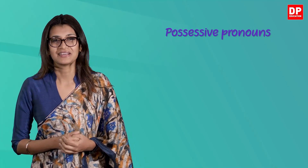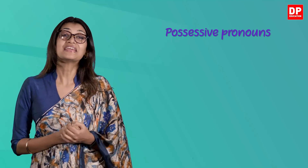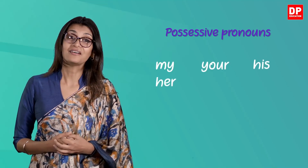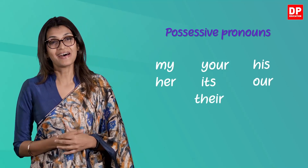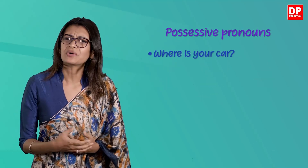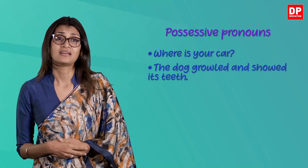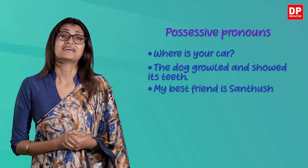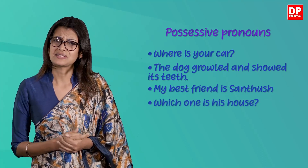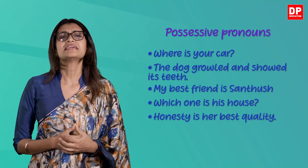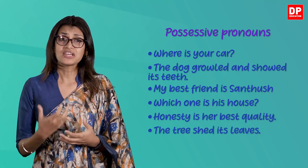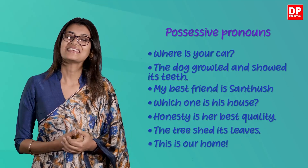When referring to a noun that belongs to someone or something, you can use possessive pronouns to show ownership. Possessive pronouns include my, your, his, her, its, our, and their. For example, where is your car? The dog growled and showed its teeth. My best friend is Santush. Which one is his house? Honesty is the best quality. The tree shed its leaves. This is our home.